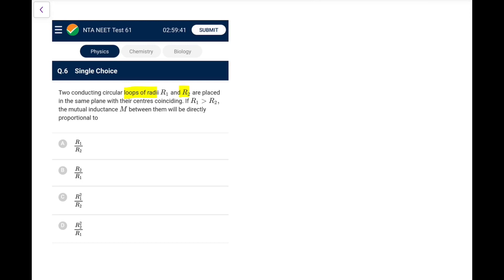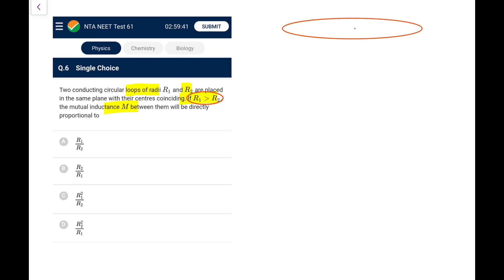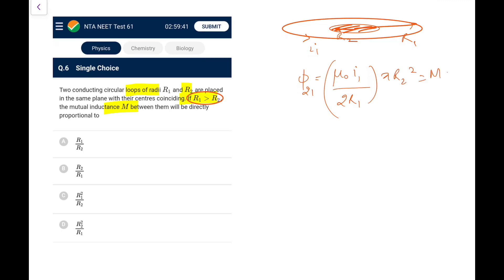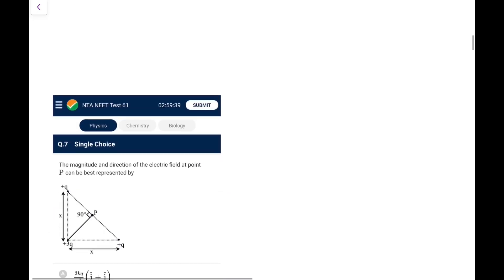Question 6: Two conducting loops of radii R1 and R2 are placed in the same plane with centers coinciding; R1 > R2. Assuming current I1 in the outer loop, the field at the center is μ₀I1/(2R1). The flux through the inner loop is μ₀I1/(2R1) × πR2². Setting this equal to M·I1, we get M = μ₀πR2²/(2R1), i.e., proportional to R2²/R1.